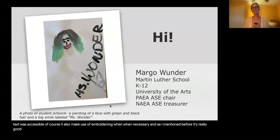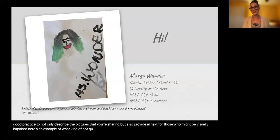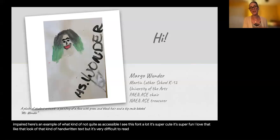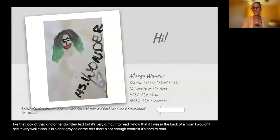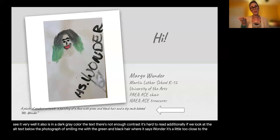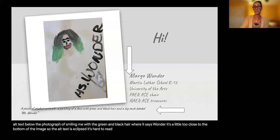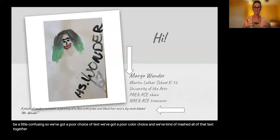It's really good practice to not only describe the pictures you're sharing, but also provide alt text for those who might be visually impaired. Here's an example of not quite accessible. I see this handwritten-style font a lot — it's super cute, but it's very difficult to read. If I was in the back of a room, I wouldn't see it well. There's also not enough contrast with the dark gray text. The alt text below the photograph is too close to the bottom of the image, so it's eclipsed and hard to read. The block of text is also too close to the image, making it confusing.